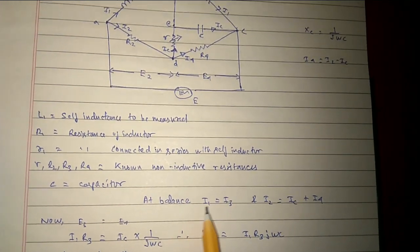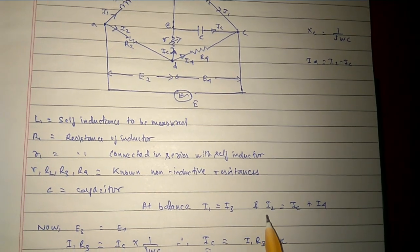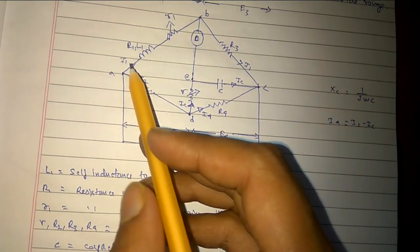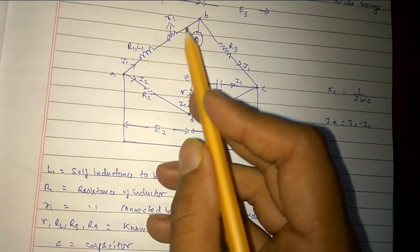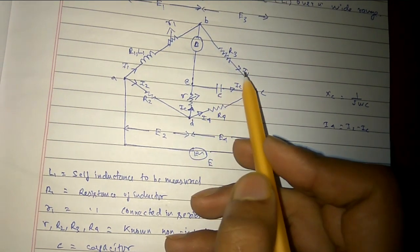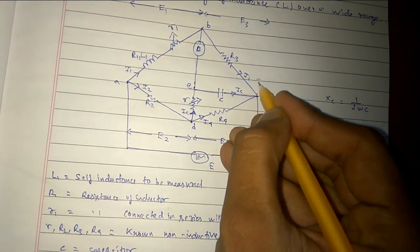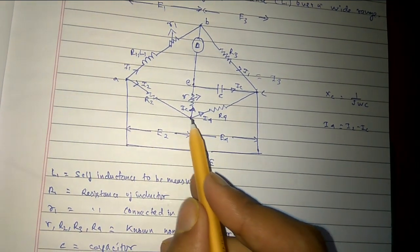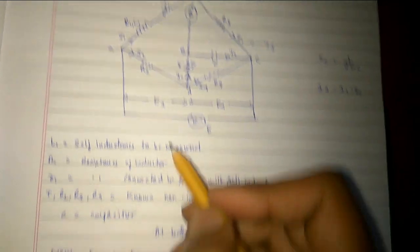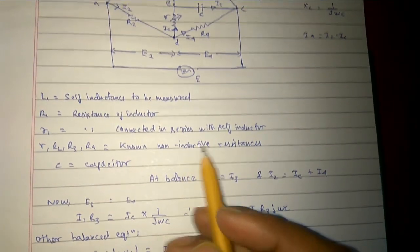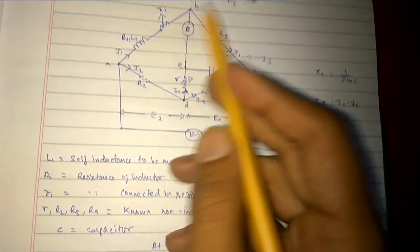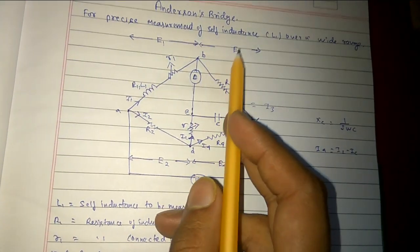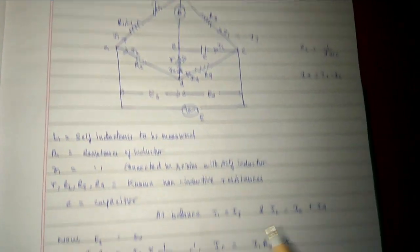At the balance condition, I1 equals I3, and I2 equals Ic plus I4. So I1 is the same as I3, and I2 equals Ic plus I4. Let's solve the potentials and get the precise inductance value, that is L1.